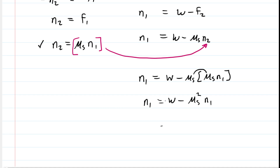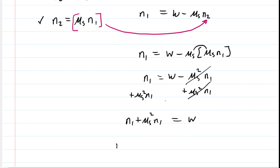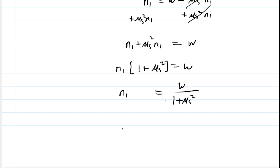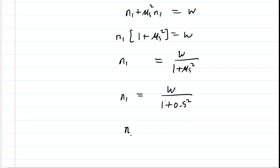We simplify by multiplying the μs terms to get μs squared. Then we add μs squared times N1 to both sides so they cancel on the right, and factor out N1 on the left, leaving N1 times (1 + μs²) equals W. Dividing both sides by that bracketed term, and plugging in μs = 0.5, we get 1.25 in the denominator — so 1 divided by 1.25 is 0.8 — giving us N1 = 0.8W.